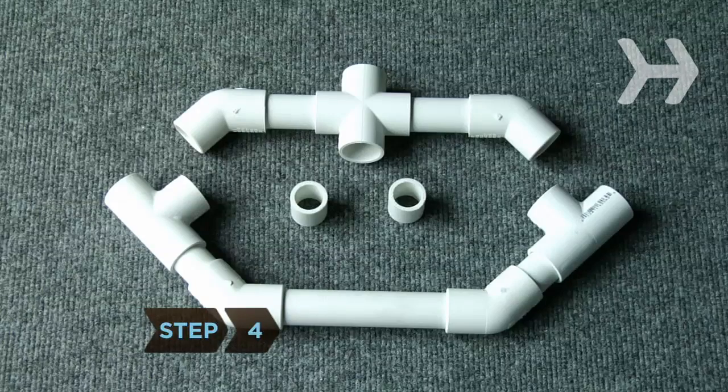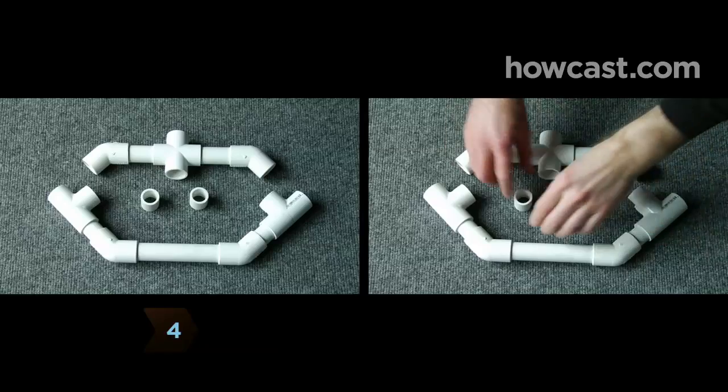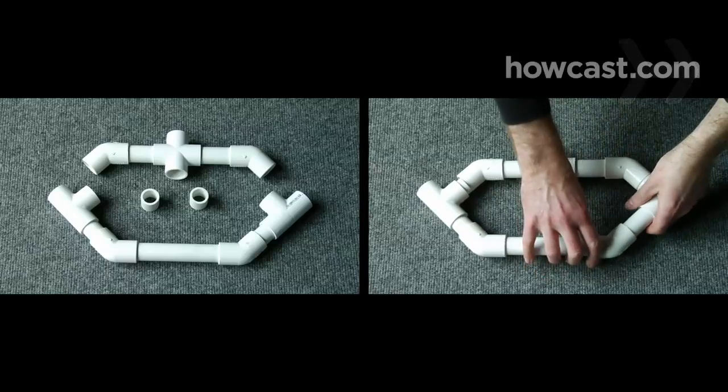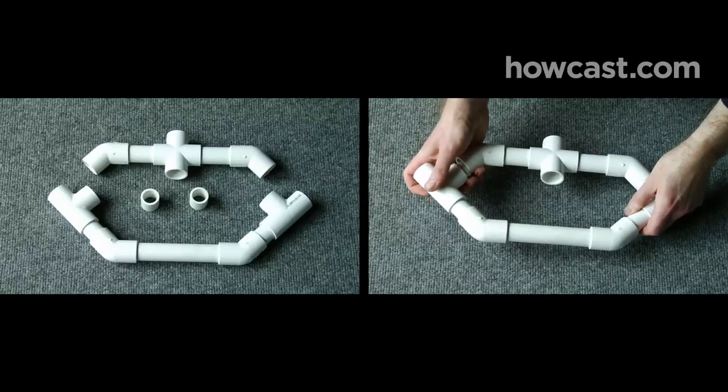Step 4. Attach the two assemblies you've built so far by attaching the elbows to two 1.5-inch PVC pieces, and those pieces to the inward-facing holes in the T-connectors.